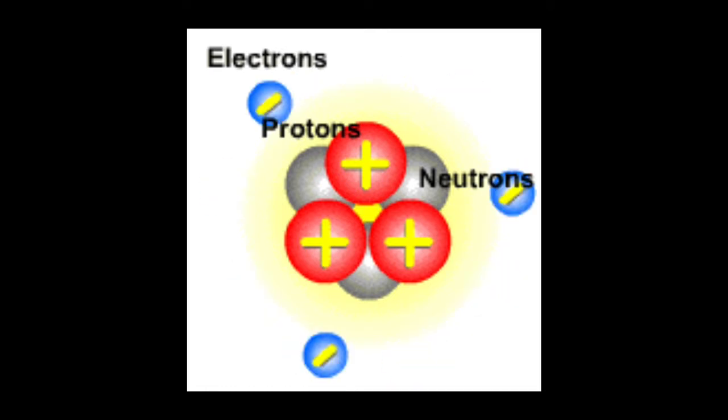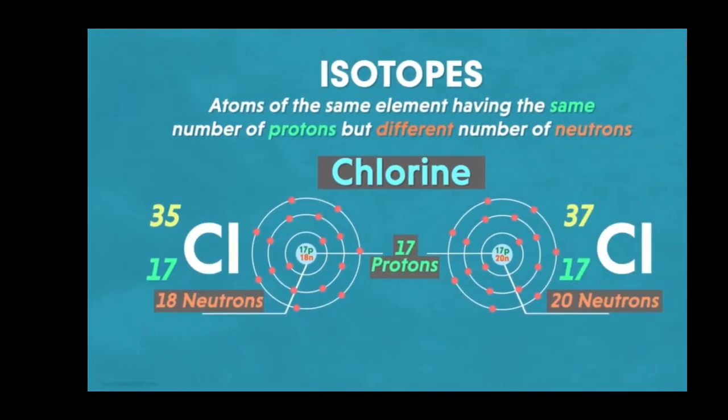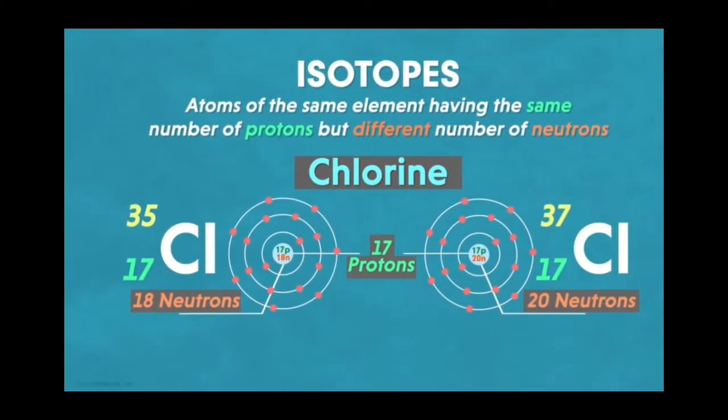The second postulate is atoms of the same element may have different atomic mass. For example, chlorine. Chlorine exists in two forms: chlorine-35 and chlorine-37. Here the atomic number is the same, that is 17, but the mass number is different: 35 and 37.